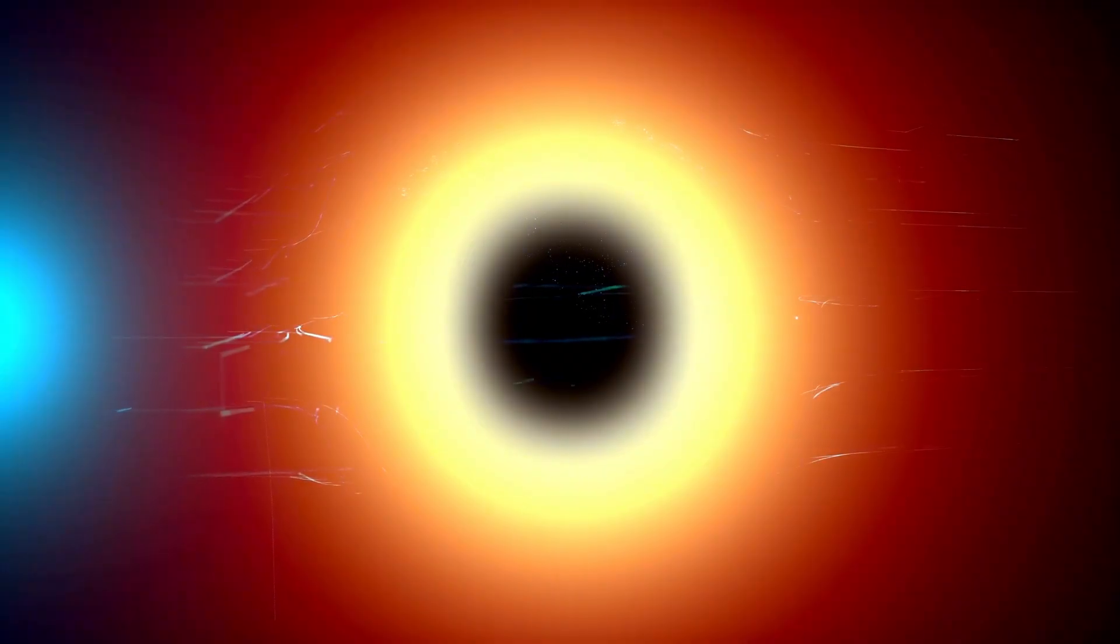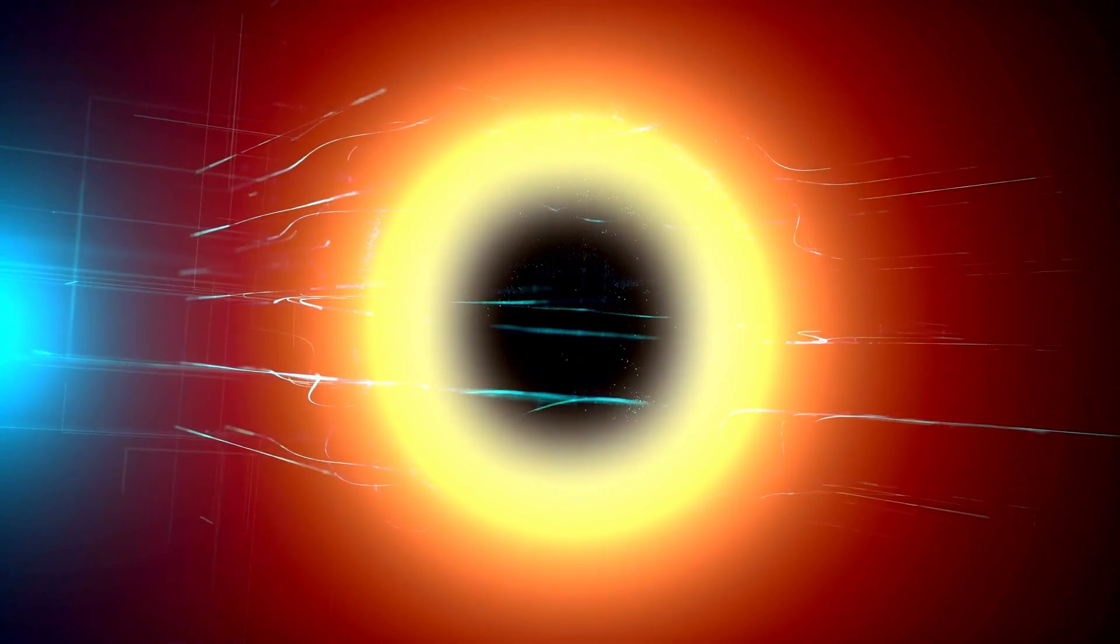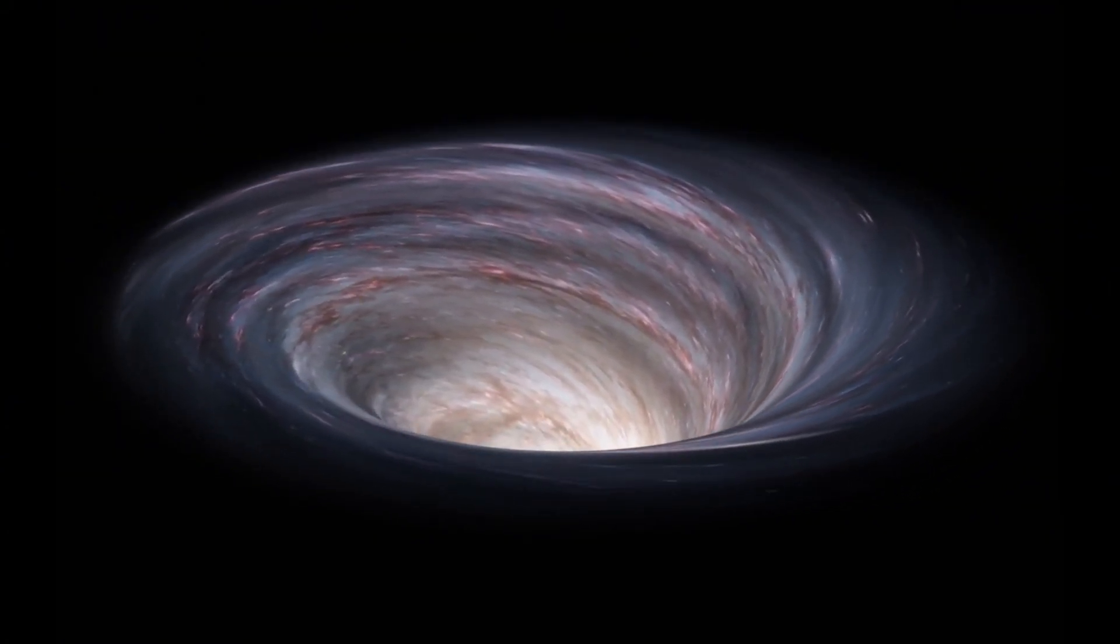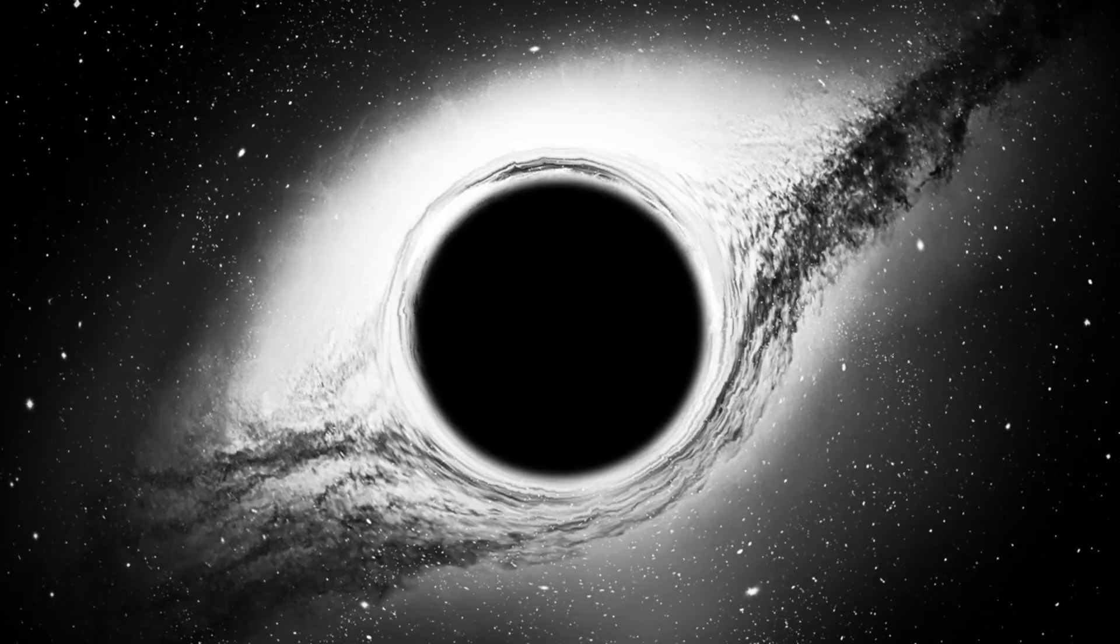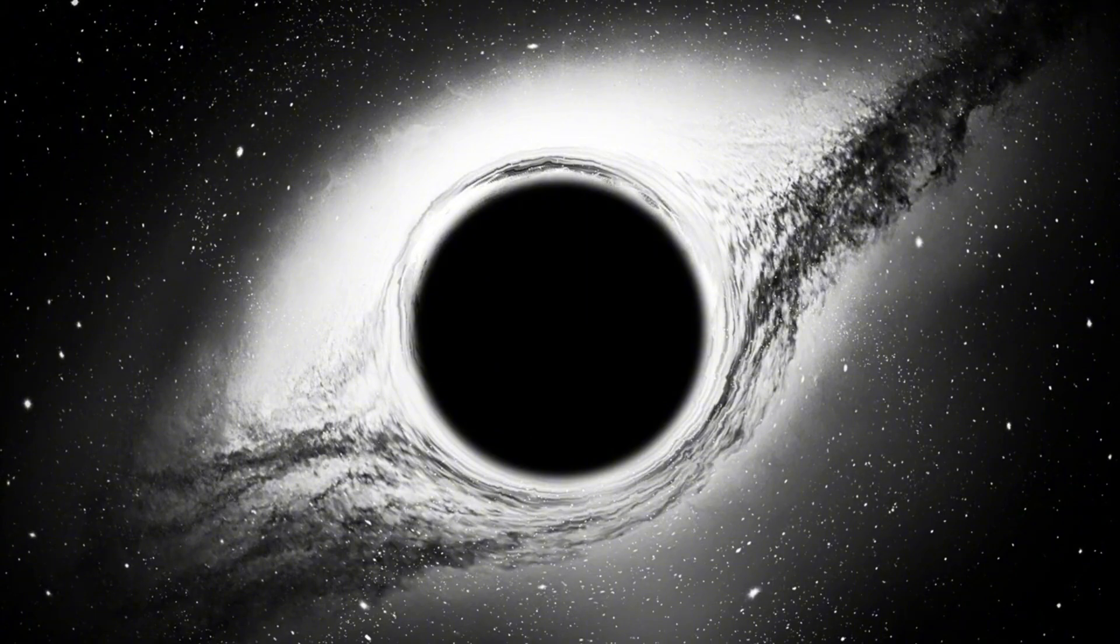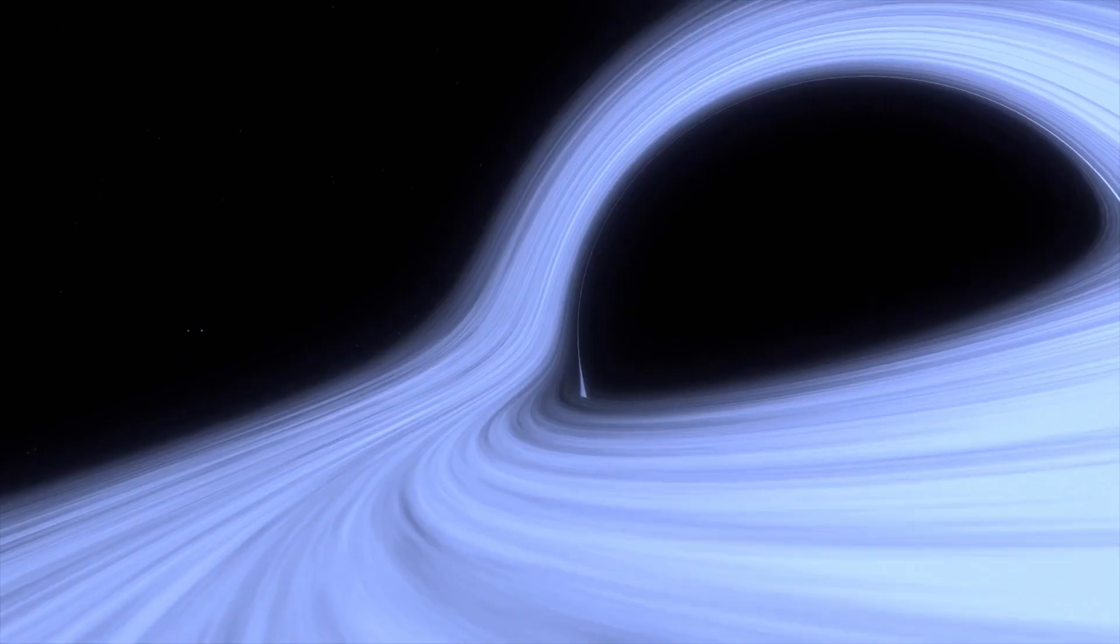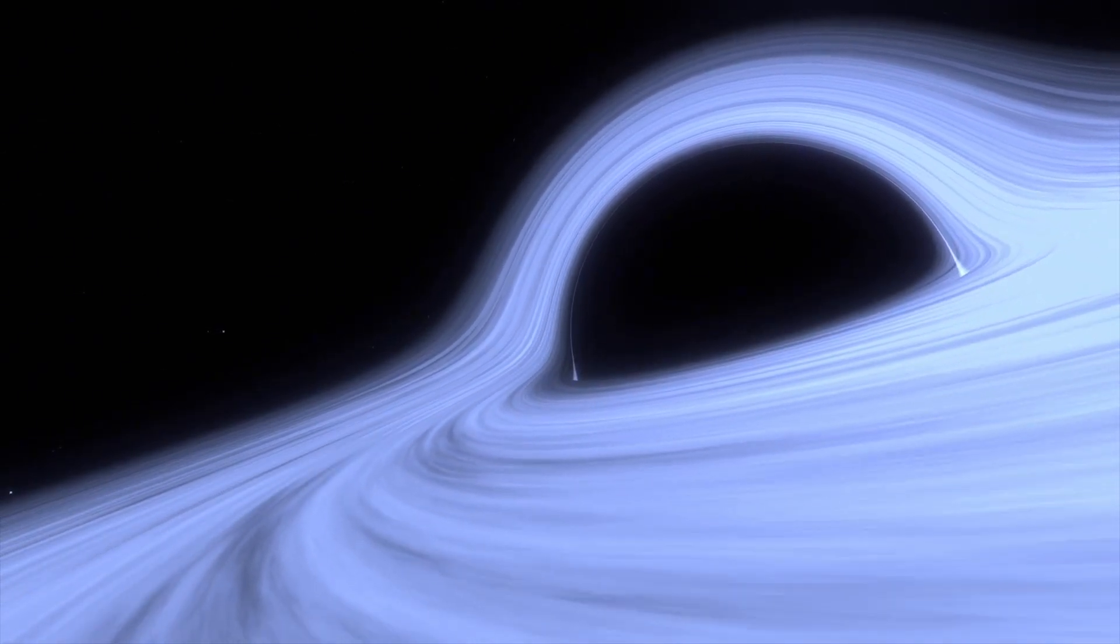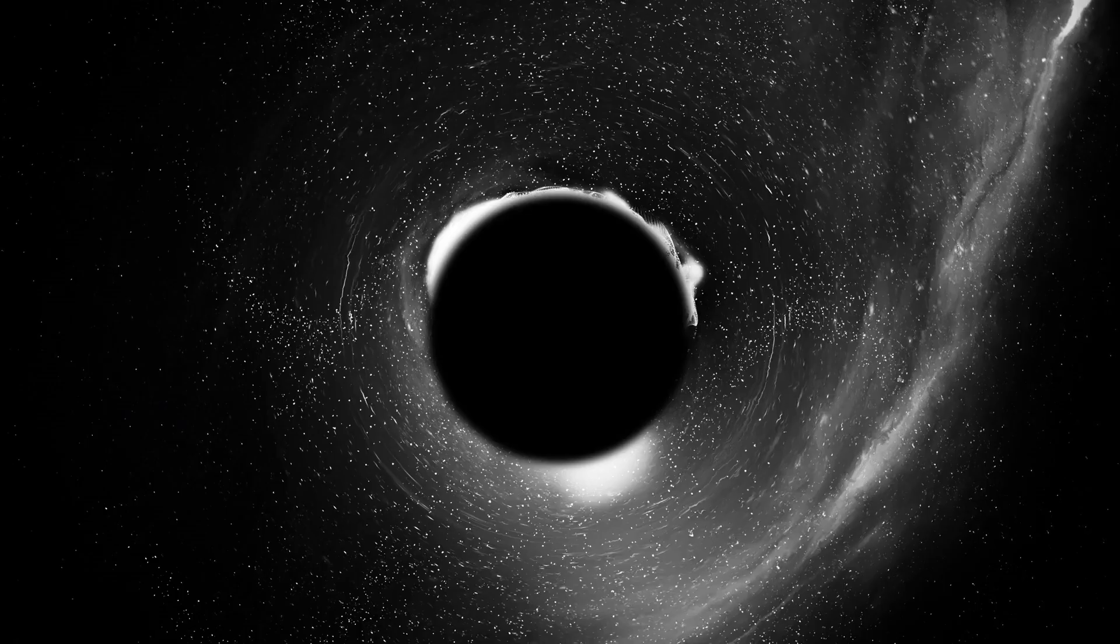Despite its promise, superstring theory remains highly speculative, as it requires extra dimensions of spacetime that we cannot yet directly observe. These extra dimensions could be so tiny that they are effectively invisible to us. Some theorists suggest that these dimensions were more prominent at the beginning of the universe during the Big Bang, and that they collapsed as the universe expanded and cooled. Superstring theory's potential to explain black holes, wormholes, and the very fabric of the universe remains one of the most exciting frontiers of modern physics.